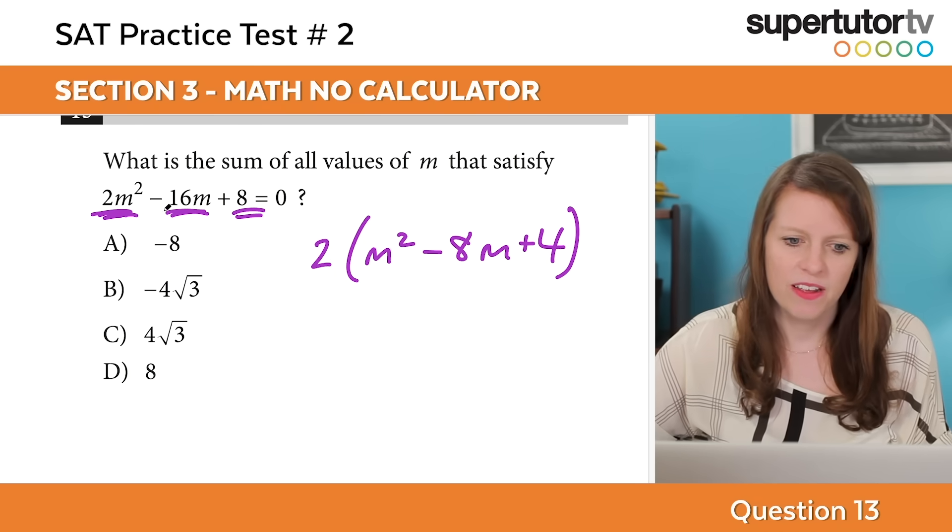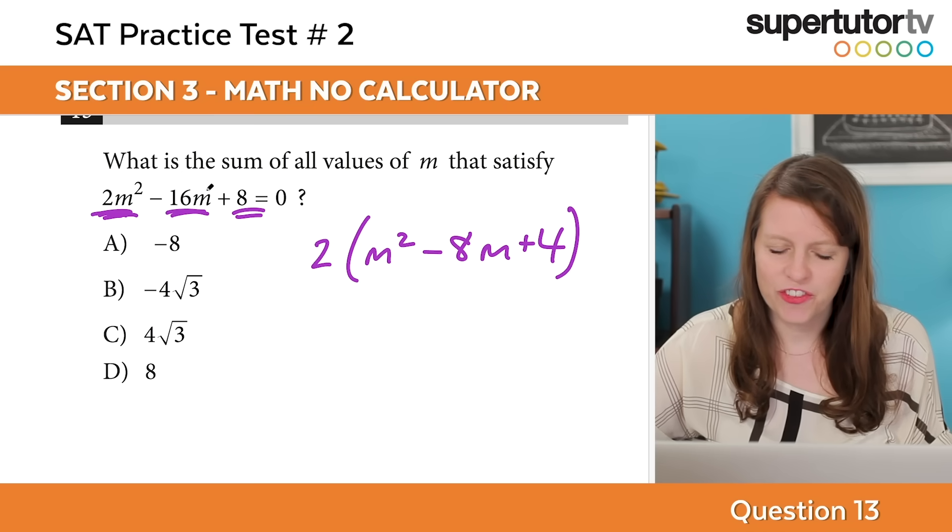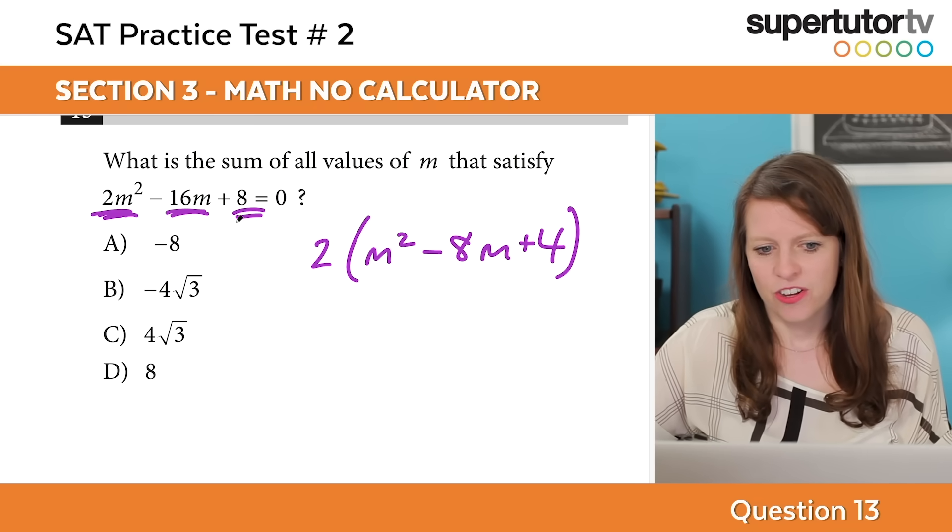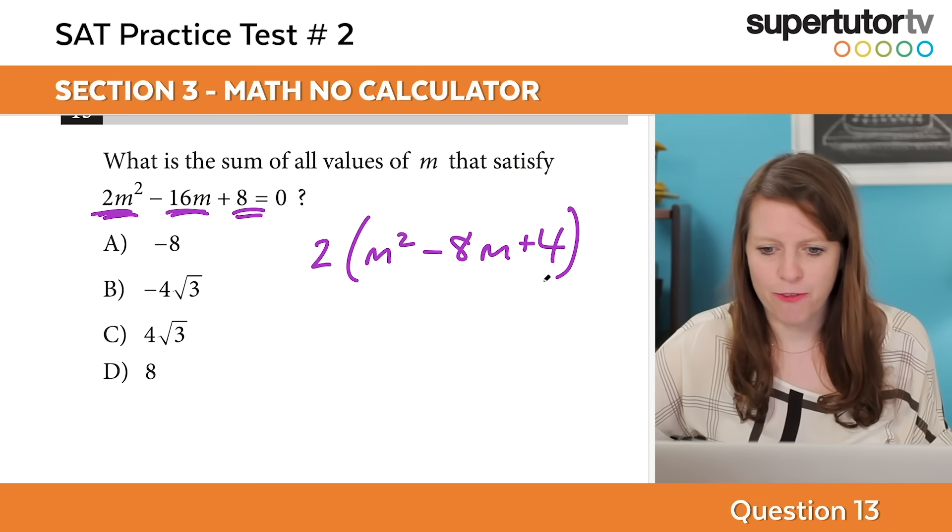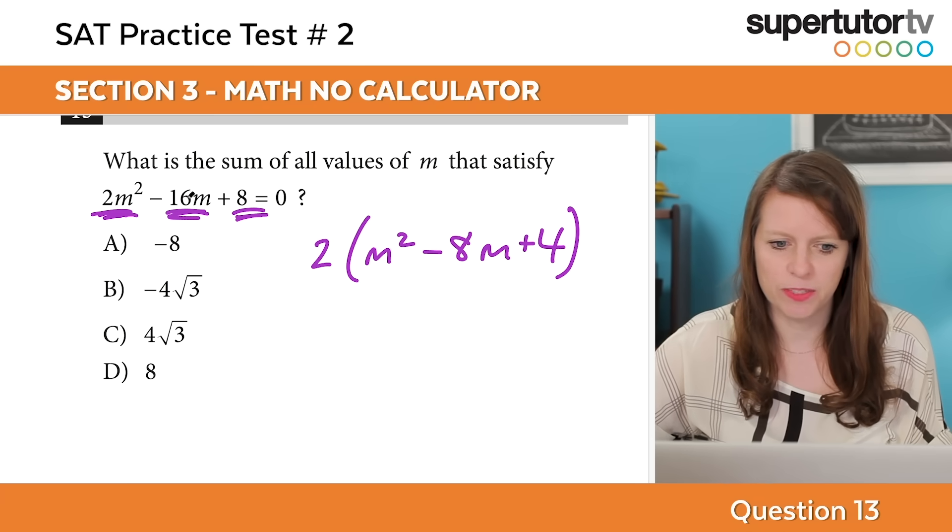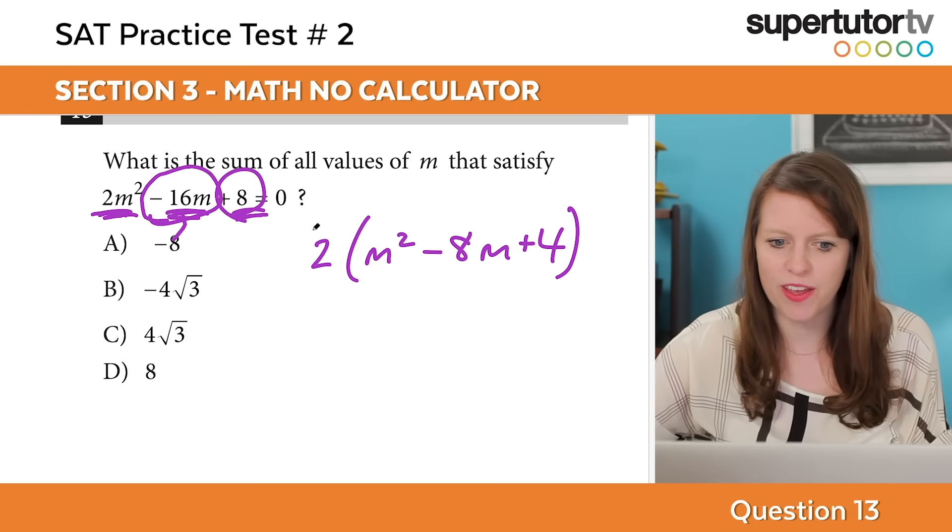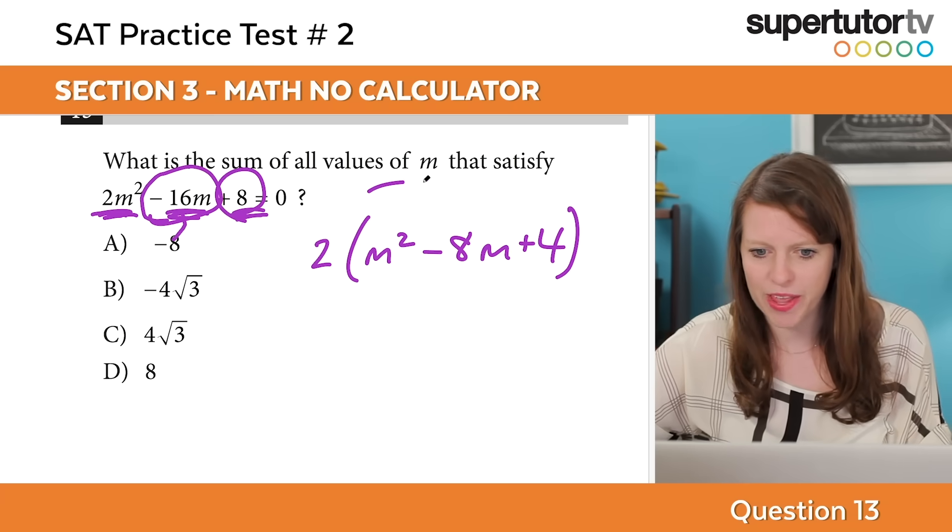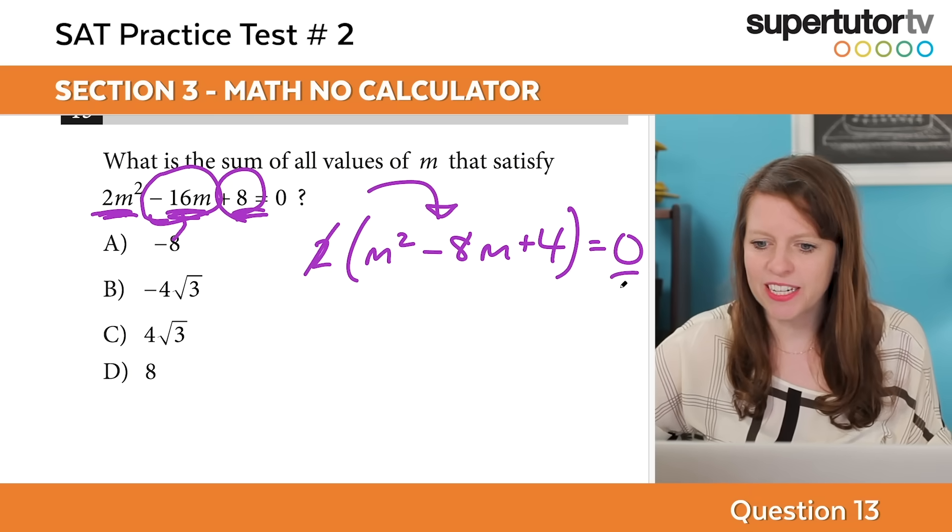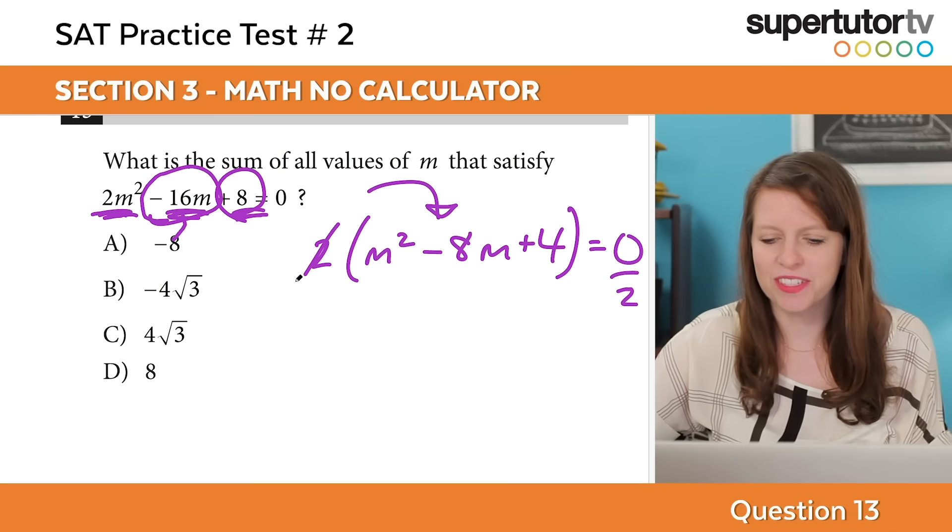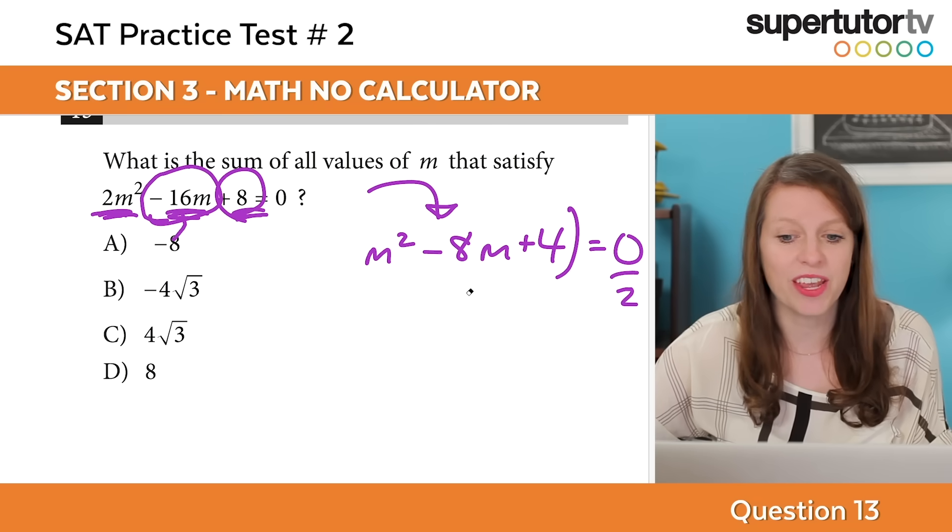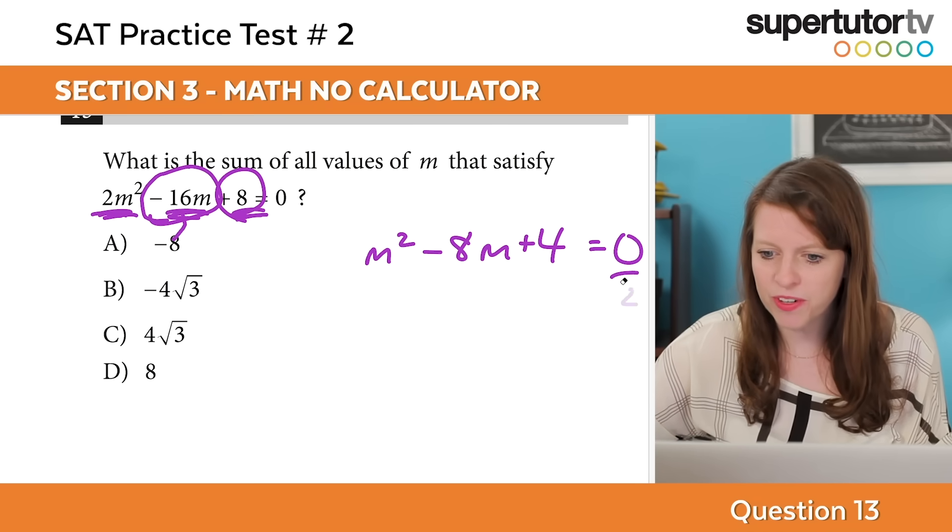The way I factor out the 2 is that I say 2 times what is 2m squared? That's m squared. What would I multiply by 2 to get to this? I would multiply by negative 8m. What would I multiply to get to 8? If I'm multiplying by 2, I would multiply by 4. So that equals 0. Now I can actually get rid of the 2 because I can divide 0 by 2 and it's the same. You have to be careful because if this isn't 0, you can't just take out the 2. But because it equals 0, we can take away the 2.